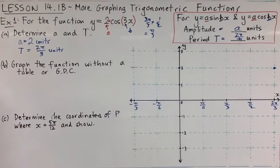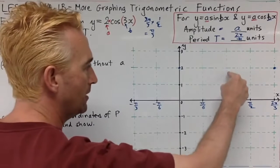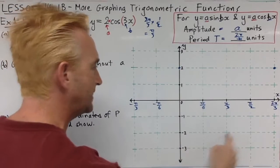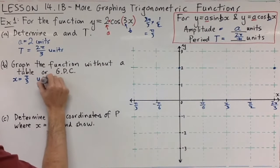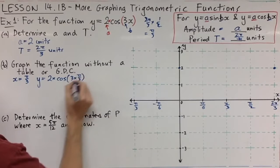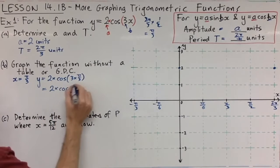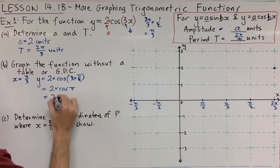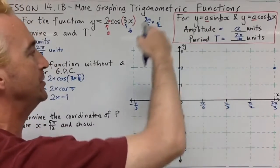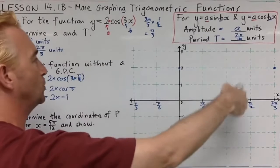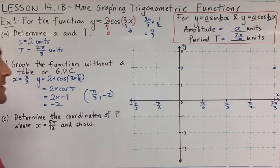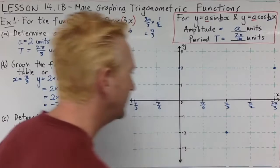We need a couple more points to make sure everything agrees. When x is π/3, we suspect the curve goes down to its minimum. Plugging in: y equals 2 times cos(3 times π/3), the 3s cancel giving 2 times cos(π). Cos π is negative 1 — cosine is always the x-coordinate on the unit circle — so y equals negative 2. This gives us the point (π/3, −2).